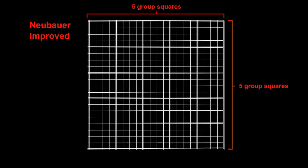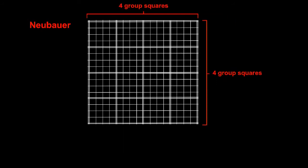Various types of hemocytometers exist. The most popular ones are Neubauer-Improved chambers. In the Neubauer-Improved chamber, the large square consists of 25 group squares. In the older Neubauer chambers, the large square consists of only 16 group squares.